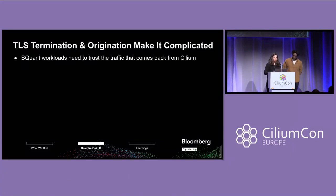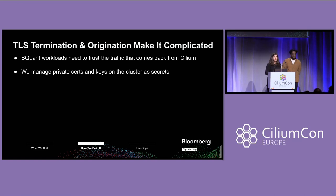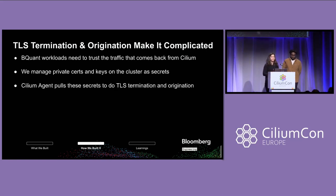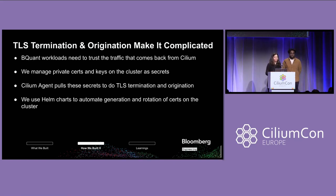It's not quite that easy. TLS termination and origination make it a little bit more complicated. Our BQuant workloads need to trust the traffic that comes back from Cilium, which means we have to provide private certs and keys that we generate on the cluster. We store them as secrets, and we take the certificates generated by the root CA and append our certificates on that. The Cilium agent is actually pulling these secrets on the cluster — the private certs and keys — to be able to do the TLS termination and origination. We use Helm to automate the generation and rotation of those certs. There was some lift to set this up, but in the end it allowed us to have a fully comprehensive solution that was secure.